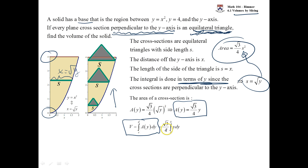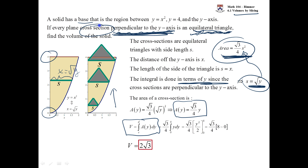You can pull the constant out and we're just integrating y. We get y squared over 2; we put 4 in and get 8. Multiplying by root 3 over 4, the answer is 2 root 3. The key is this formula and being able to represent s as a function of y, in this case, because we're perpendicular to the y-axis for our cross-sections.